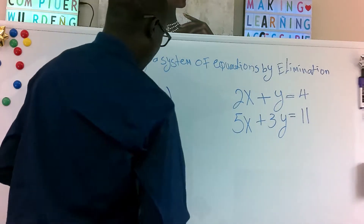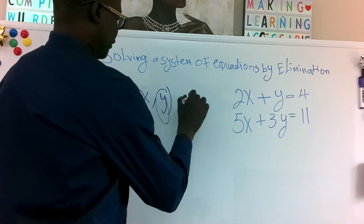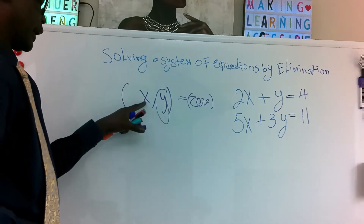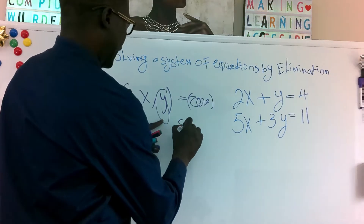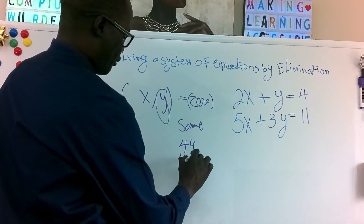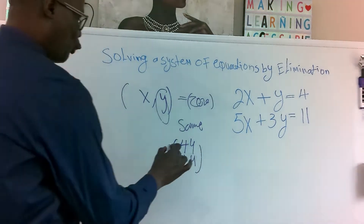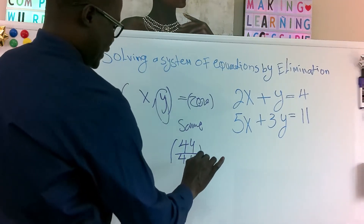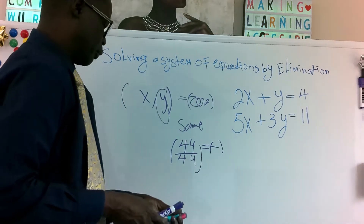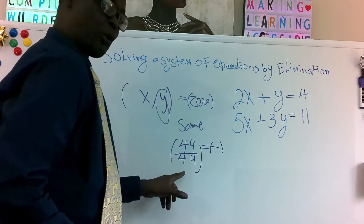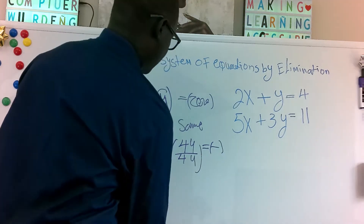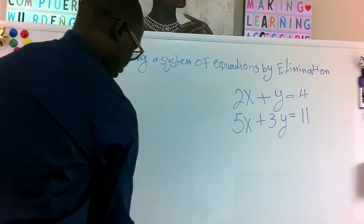The way we solve it using elimination is we make one of the variables equal zero. To do that, we need the coefficients of that variable to be the same in both equations — but one must be negative and one positive. When you add a positive and a negative number of the same magnitude, you get zero, and that's what we're going for.